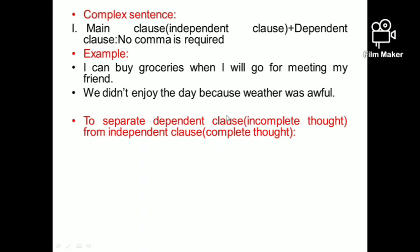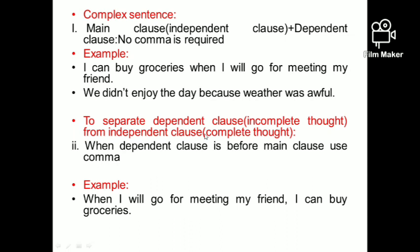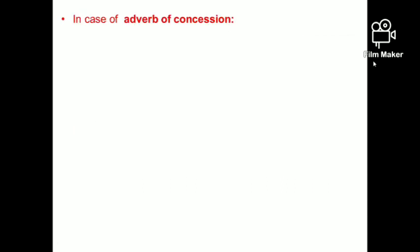In the second structure, when the order is shuffled — dependent clause first, then independent clause — we need to use a comma to separate them. For example: 'When I will go for meeting my friend, I can buy groceries.' Here the dependent clause is in the beginning, so a comma is necessary after it. Another example: 'As the weather was awful, we didn't enjoy the day.' Here the dependent clause comes first, so a comma is placed after it before the independent clause.